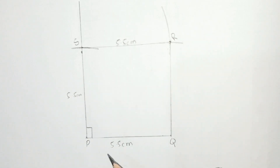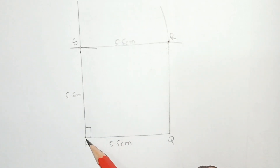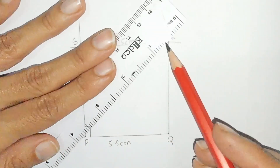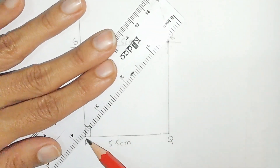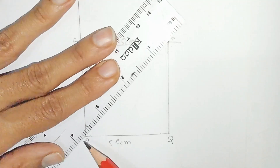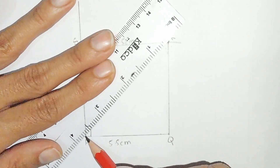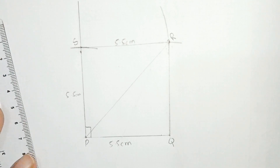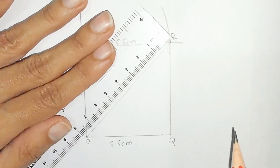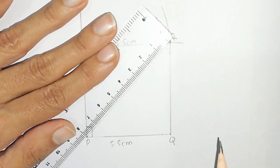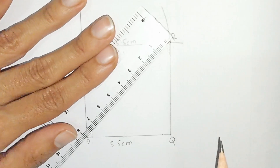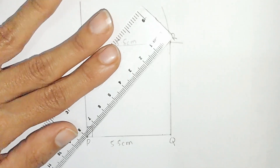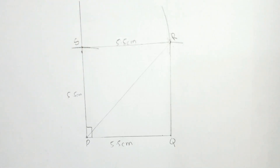Now we have to measure the length of diagonal PR. First, we draw the diagonal and then measure it. PR is equal to 8 centimeters.